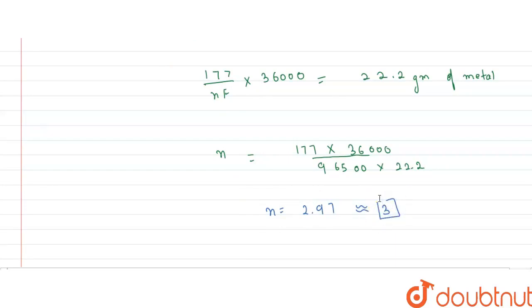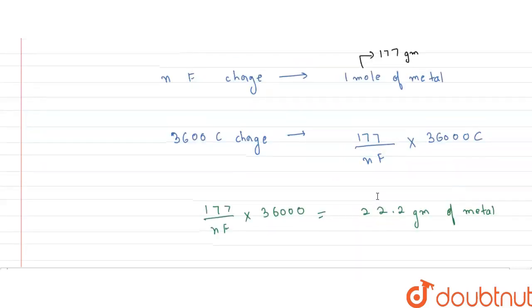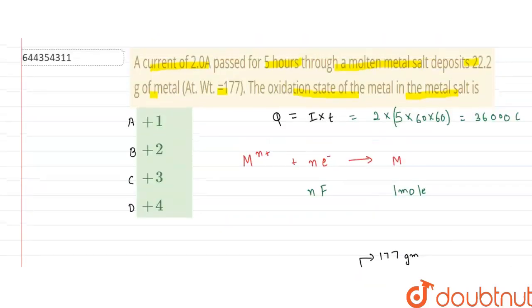So from here we can say that the metal is present at the oxidation state of 3. So I can say that option C is the correct answer. So with this we complete the entire solution. Thank you.